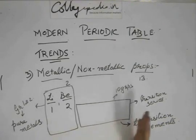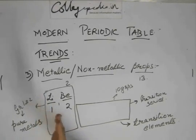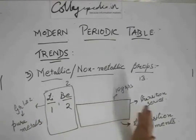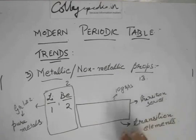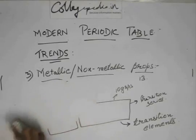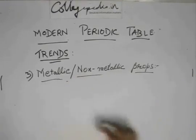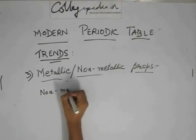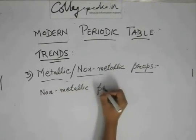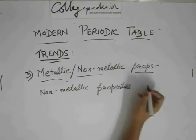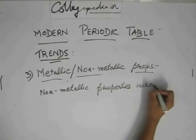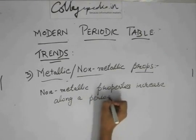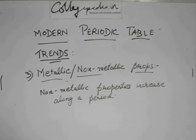The transition series comes between the metals and the non-metals. From the left of the periodic table going right, elements slowly start becoming non-metals, and by the time you reach the extreme right they are non-metals. So what we can conclude is that non-metallic properties increase along a period. Now let us examine what happens down a group.